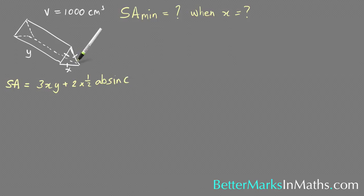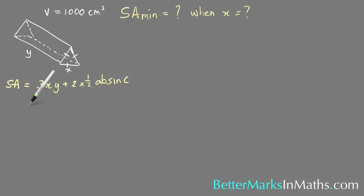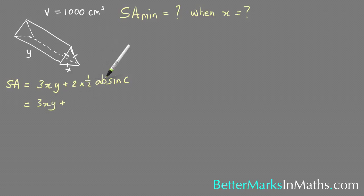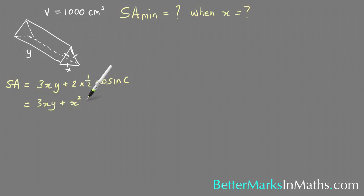That formula is a good one to know when you have angles in triangles. This being an equilateral triangle, the angles in each corner are equal to 60 degrees. So the expression becomes 3xy plus 2 times one-half, with a and b both equal to x, giving x squared times sine of 60 degrees.